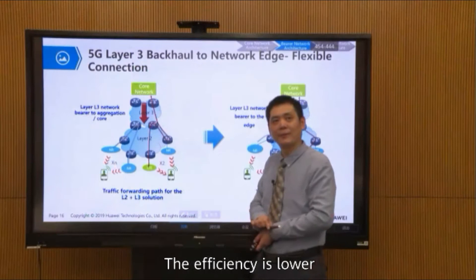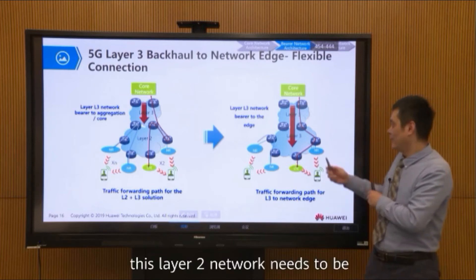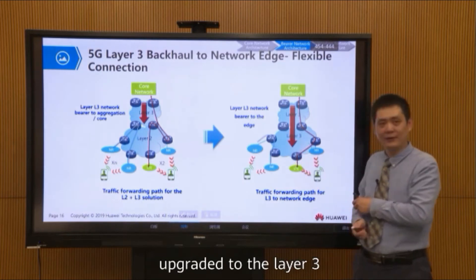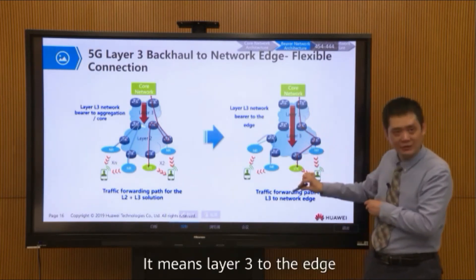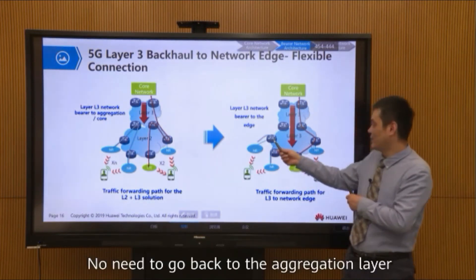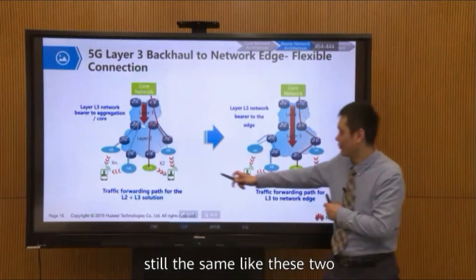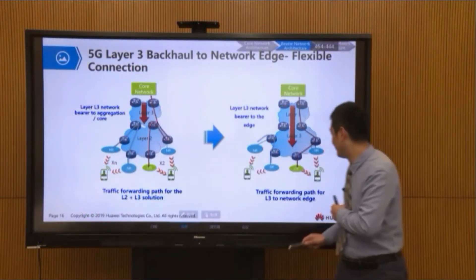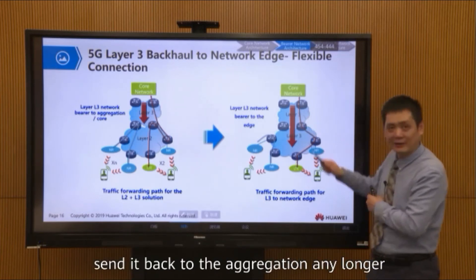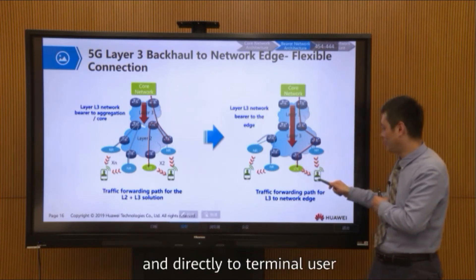This indirect path may cause some waste of resources and may bring more latency. Also, if two 5G new radio base stations want to communicate, they also need to go back to the aggregation layer — they cannot communicate directly. So there is an indirect path and their efficiency is lower. When we migrate to 5G, this Layer 2 network needs to be upgraded to Layer 3, to the edge. So the 5G can forward it to the 4G base station directly to the terminal user.